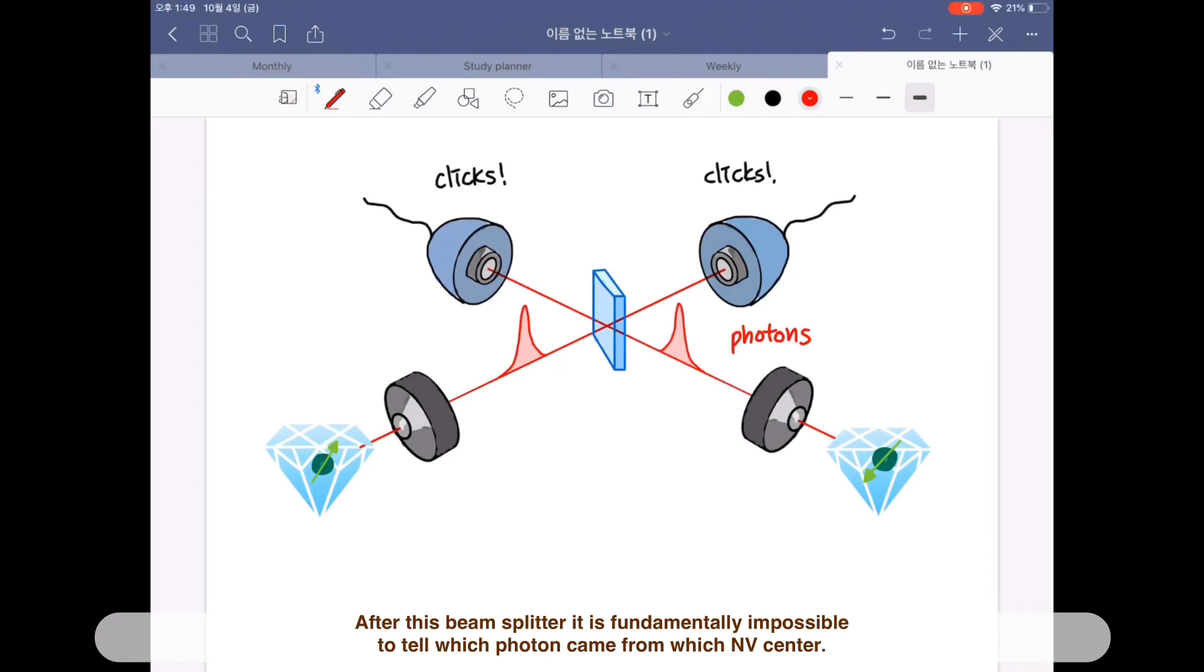it is fundamentally impossible to tell which photon came from which NV center. Because even though we detect a certain pair of photons behind the beam splitter, we cannot know which photon has come from pointing up NV center or pointing down NV center.